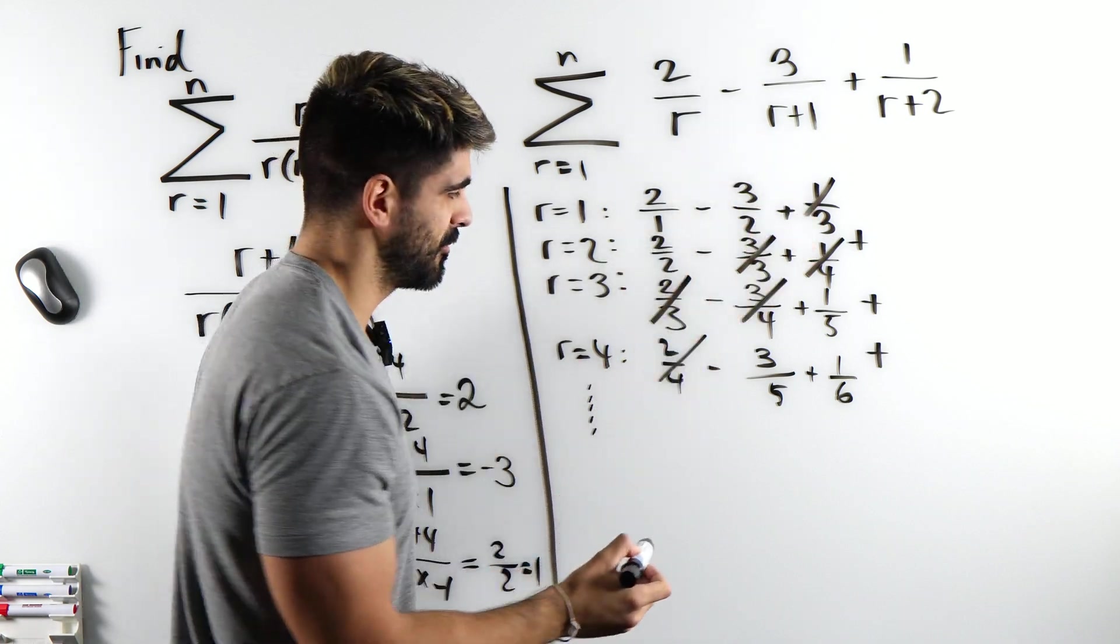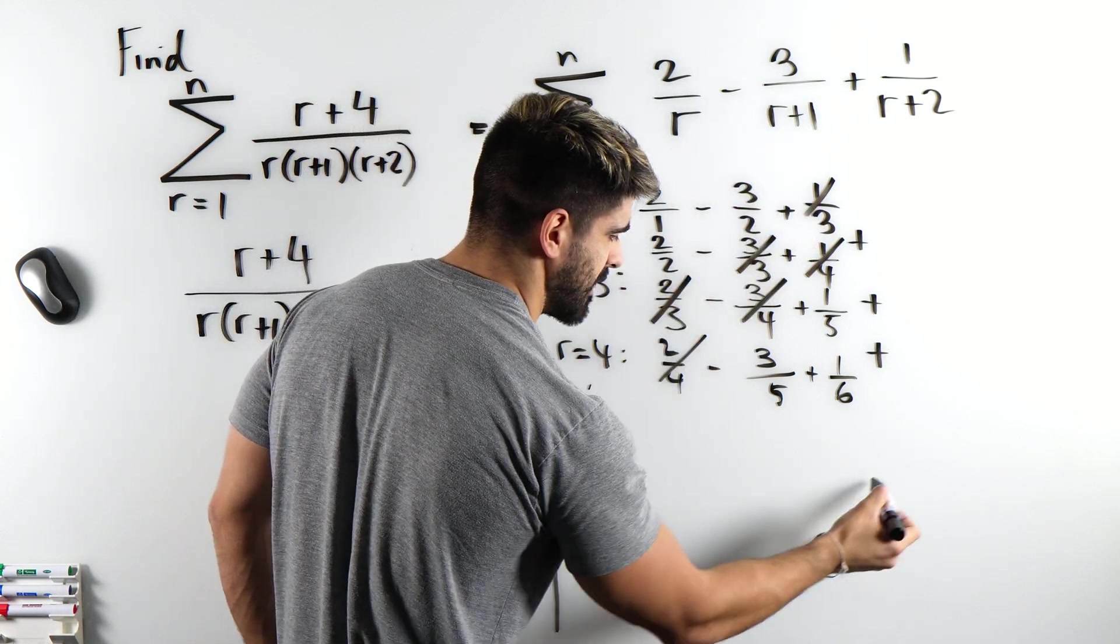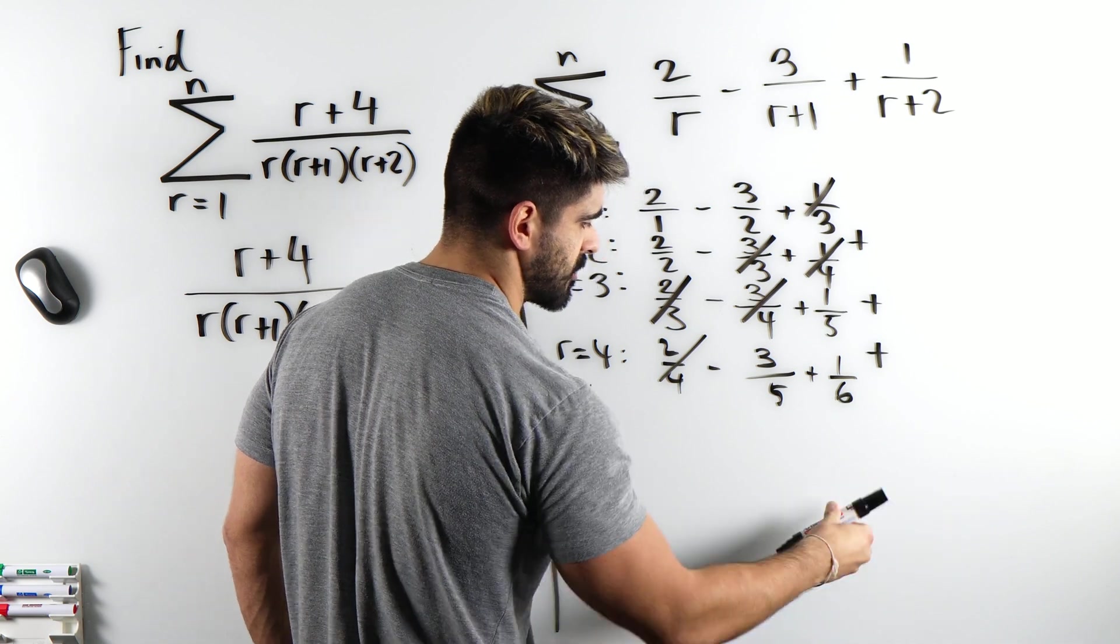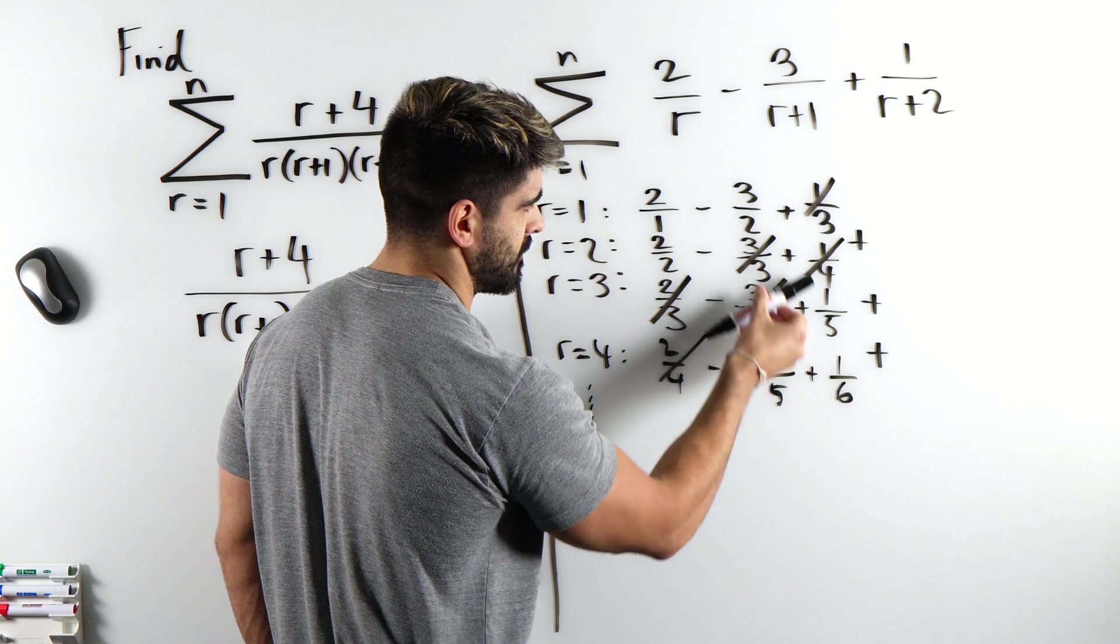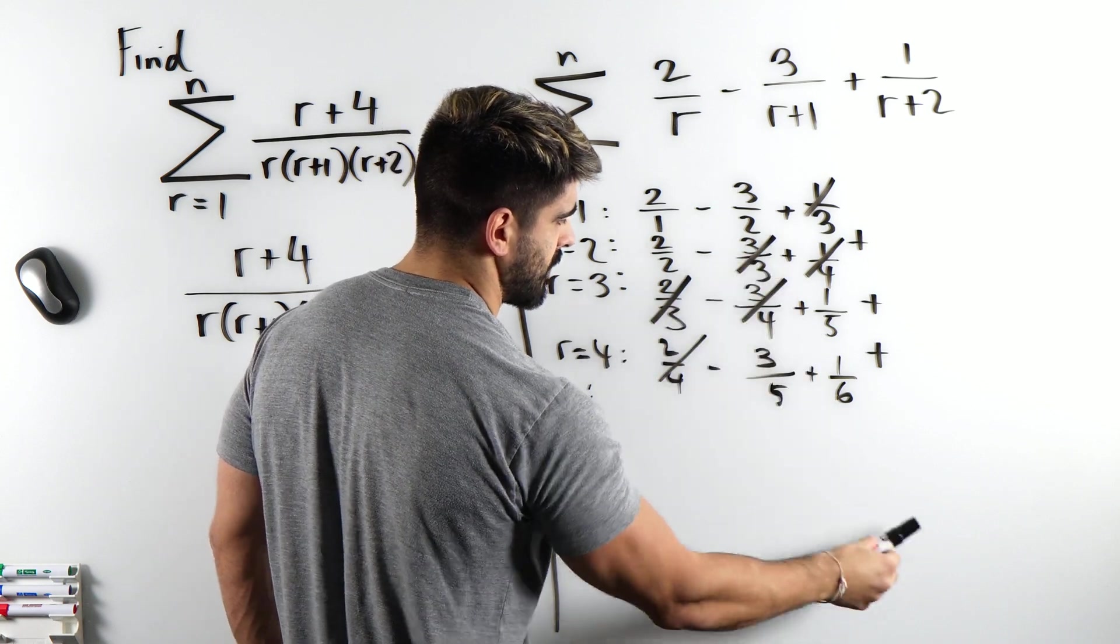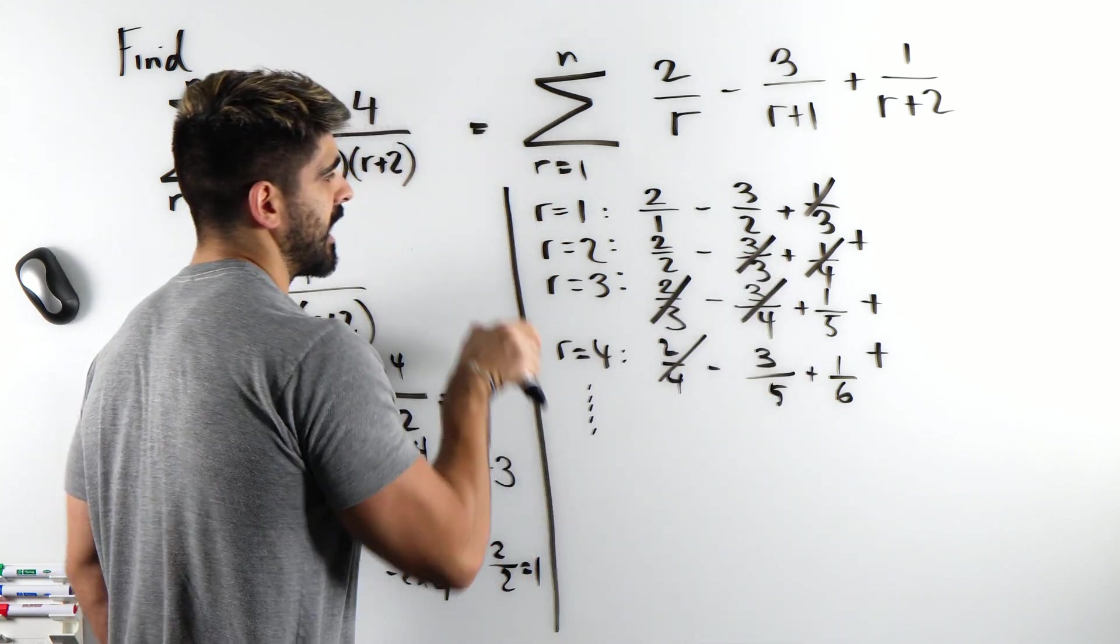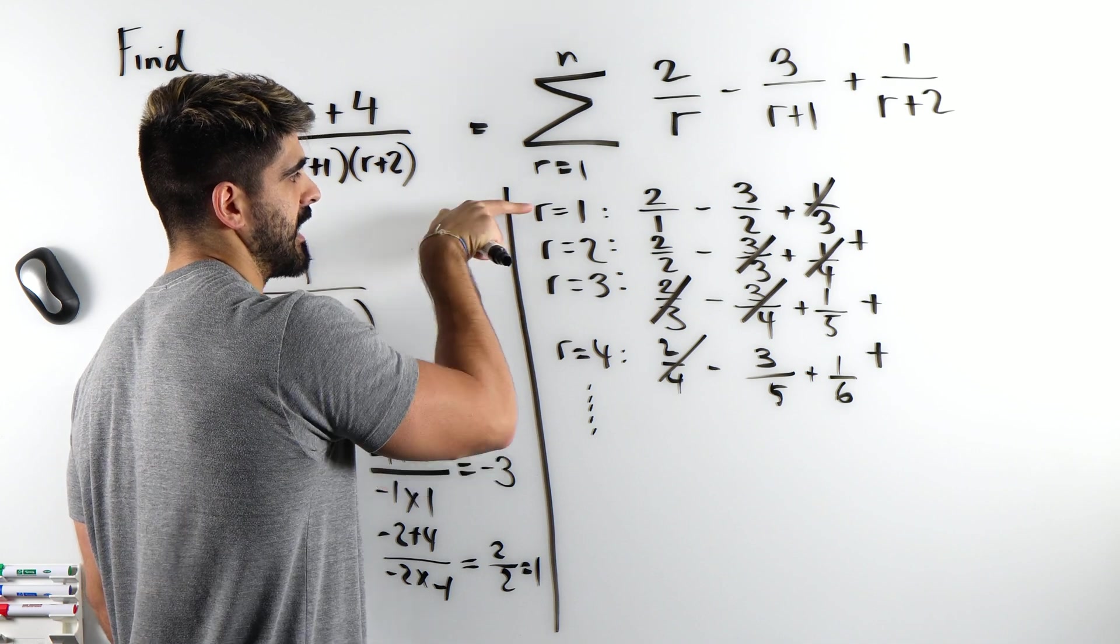which means there's going to be a trio down here, which will also survive because we're cancelling like this. So there's going to be a trio down here. Which means I need to go up to the second last line and the last line.